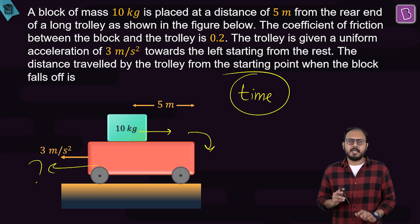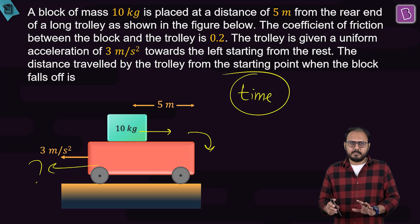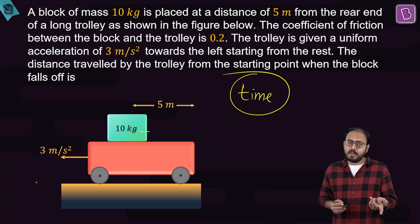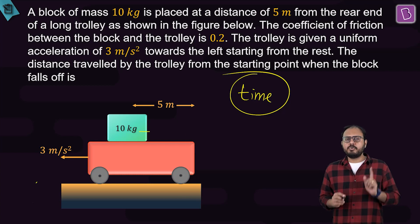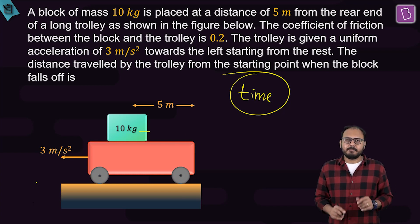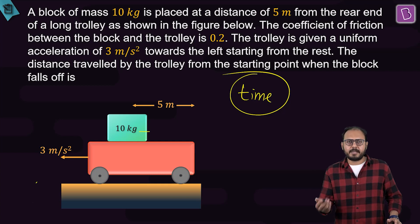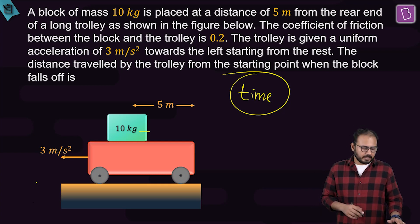Who is the key parameter which will relate these two movements? The key parameter is time. In the time taken by the 10 kg block to slip back and fall, in that same time, how much does the trolley go forward? Time is independent of the frame choice.